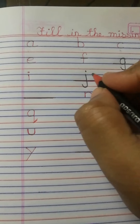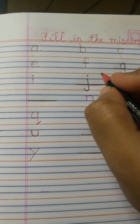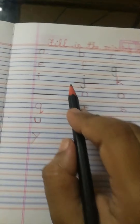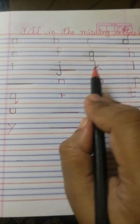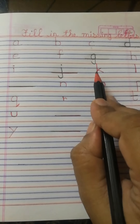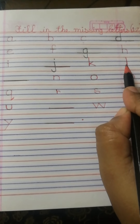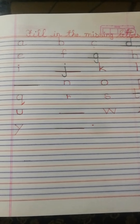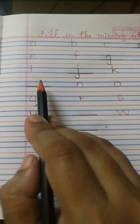You have to write the letters within the line. Now, after small j, which letter will come? Small k. Next to small k, which letter will come? Small l. After small l, which letter will come? Small m. Here small m is missing, right.